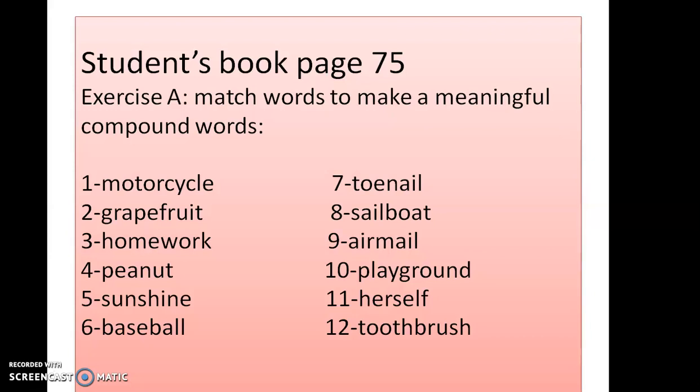Three: homework الواجب المنزلي. Four: peanuts اللي هي الفول السوداني. Five: sunshine اللي هي أشعة الشمس. نلاحظ بكل هدول الكلمات إذا حاولنا نفصل بين الكلمتين حينتج عنا كلمتين — مثل sunshine: sun شمس، shine يضيء.